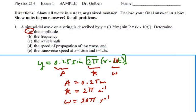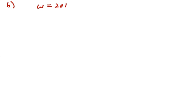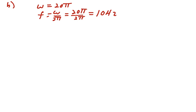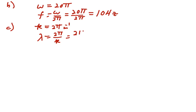We've answered the amplitude. Now we want frequency and wavelength. To get the frequency, we use the angular frequency: frequency equals angular frequency divided by 2 pi, so that's 20 pi divided by 2 pi, which gives us 10 hertz. To get the wavelength, the angular wave number is 2 pi per meter, so the wavelength is 2 pi over the angular wave number, which is 2 pi over 2 pi, or 1 meter.